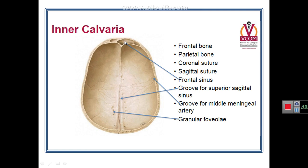Anteriorly in the frontal bone, the calvaria shows the cavity of the frontal air sinus, one of the paranasal air sinuses. The inside of the cranial vault also shows a frontal crest in the midline of the frontal bone. The sagittal suture from inside shows a groove called the sagittal groove, which is a groove for the superior sagittal sinus.